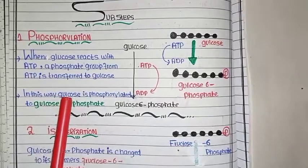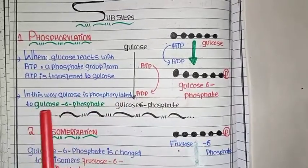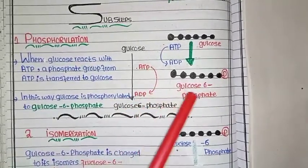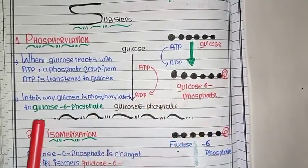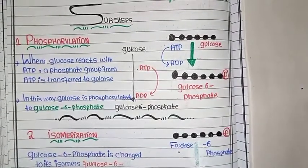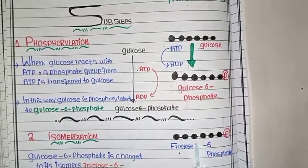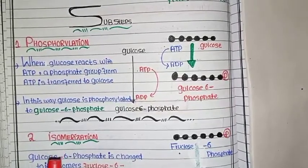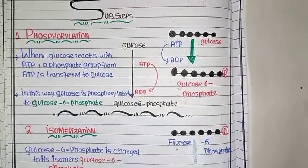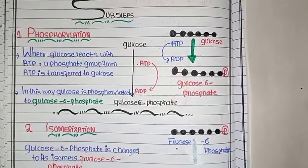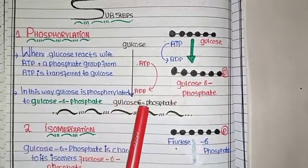In this way glucose is phosphorylated to glucose-6-phosphate. The first step of glycolysis is phosphorylation. The second step is isomerization. Isomerization means converting a molecule to its isomer — the isomer is on the right side.